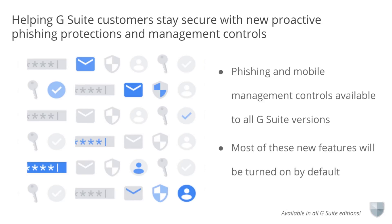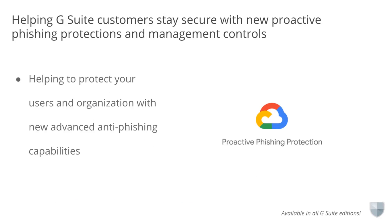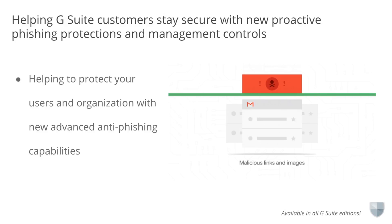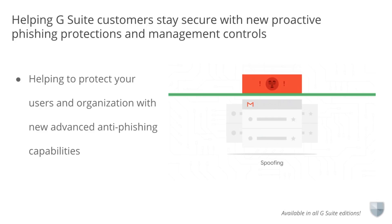Many of these features will be turned on by default and, in most cases, your users won't have to do a thing. We're applying machine learning, or ML, to billions of threat indicators and evolving our models to quickly identify what could be a phishing attack in the making. Information from these self-learning ML models help us flag suspicious content. We'll take a look in the Admin Console later on.